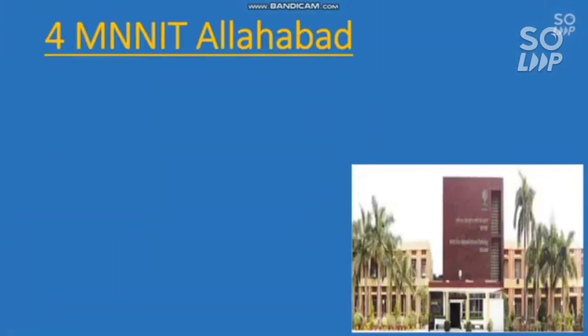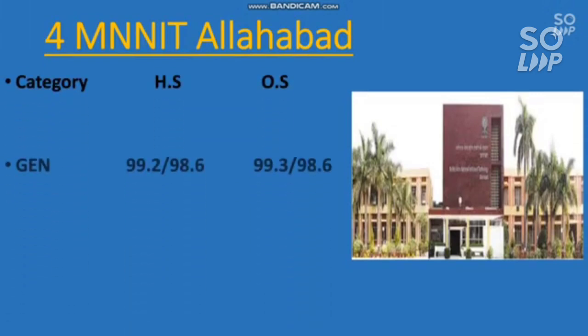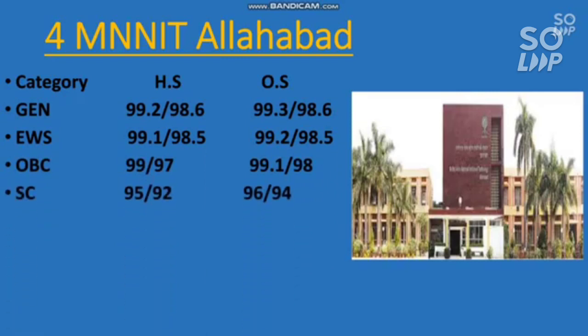Number four is MNNIT Allahabad. EC cutoffs: General 99.3, EWS 99.2, OBC 99.1, SC 96, and ST 95 percentile required.